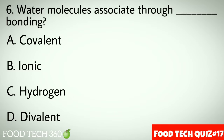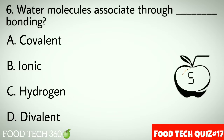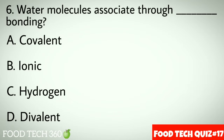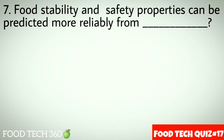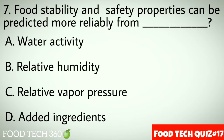Question number 6: Water molecules associate through dash bonding. Options: A. Covalent, B. Ionic, C. Hydrogen, D. Divalent. Correct answer: C. Hydrogen.